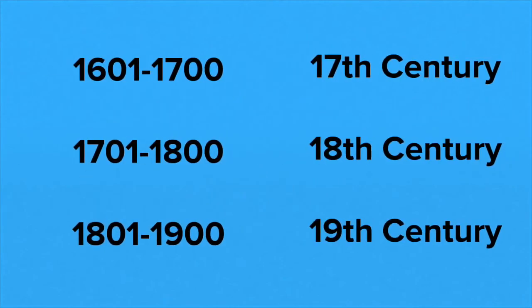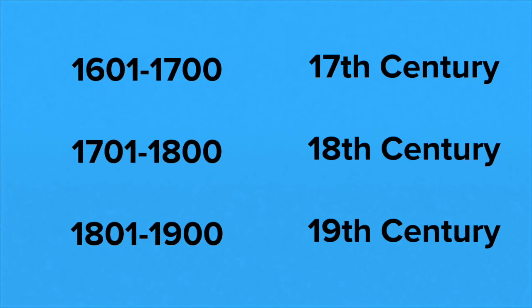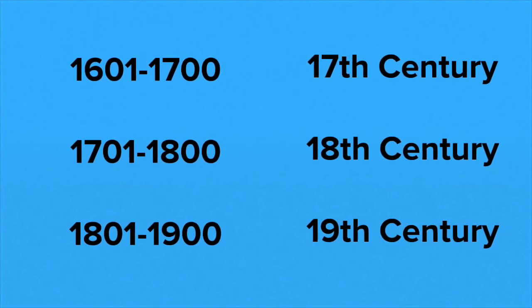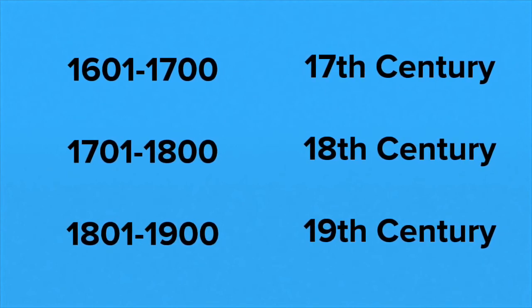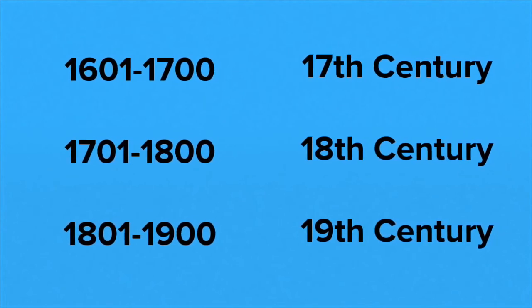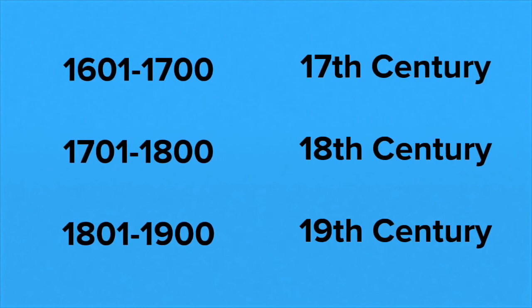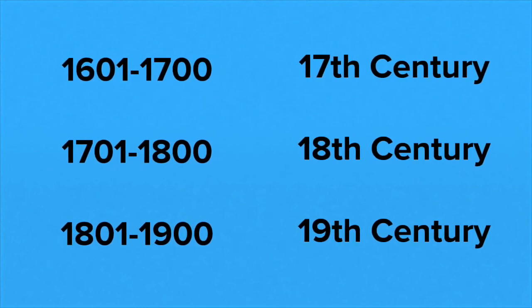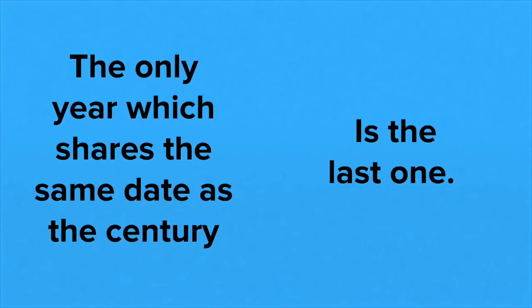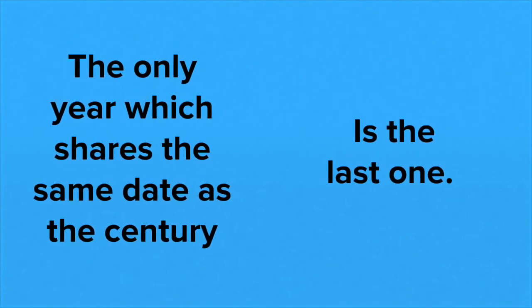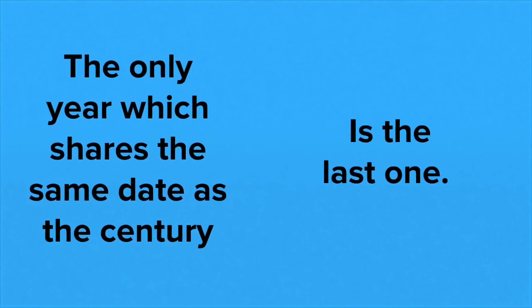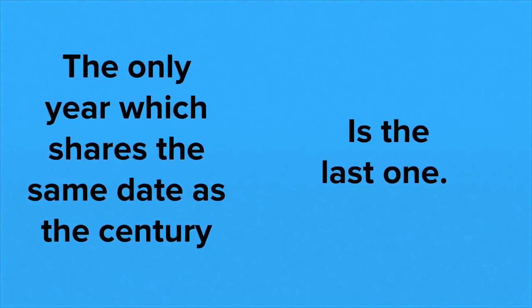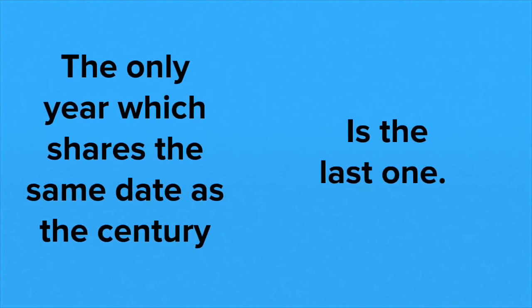For example: 1601 to 1700 is the 17th century; 1701 to 1800 is the 18th century; 1801 to 1900 is the 19th century. A helpful rule I use with my students is that the only year which shares the same number as the century is the last one.